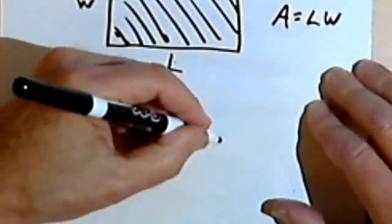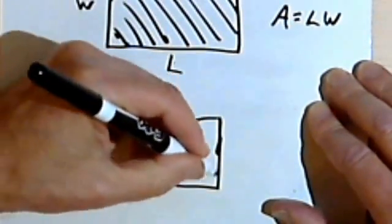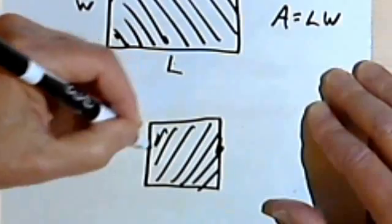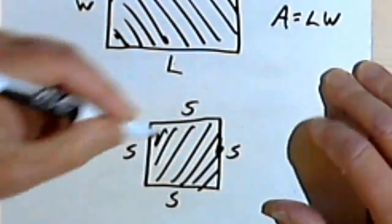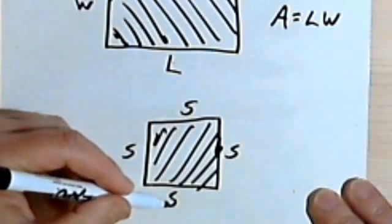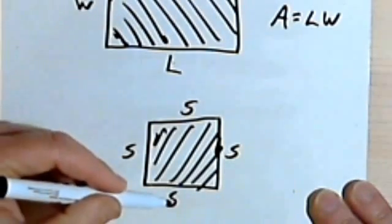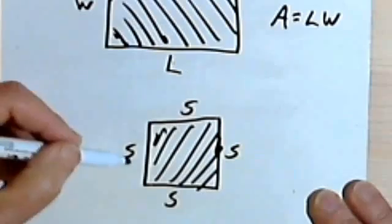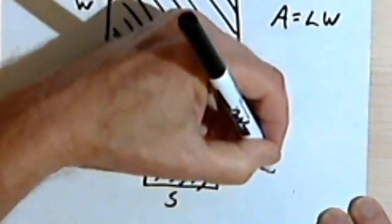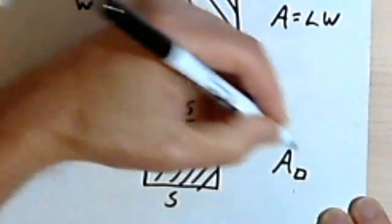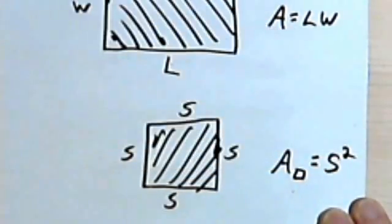If I want the area of a square, remember all the sides are the same. So if I multiply a side times a side — thinking of it as width times length — that would just be side squared, or s squared. So the area of a square is going to be s squared.